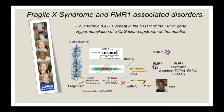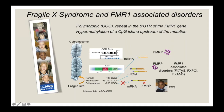Individuals who carry a premutational allele containing between 55 and 200 CGG repeats have elevated mRNA levels — they produce more mRNA than normal — yet the amount of FMRP produced is moderately low or low depending on the CGG repeat number. This is believed to be due to a deficit in translation efficiency. As a consequence, clinically we see a number of FMR1-associated disorders including FXTAS, which is fragile X-associated tremor ataxia syndrome.